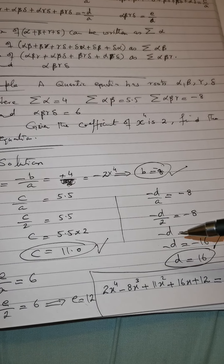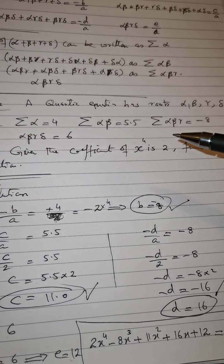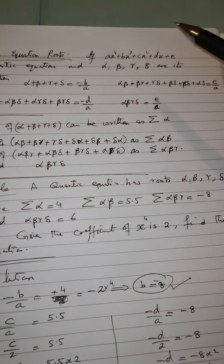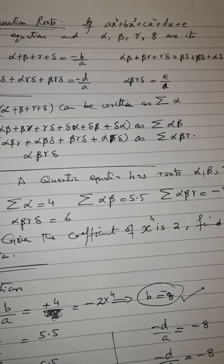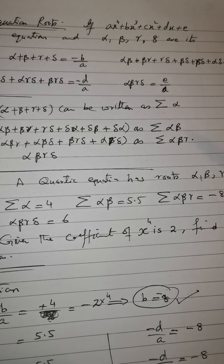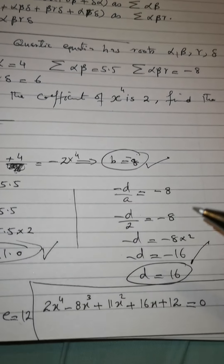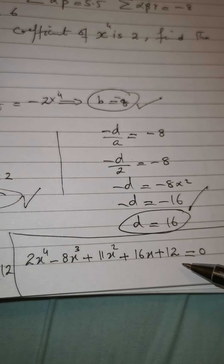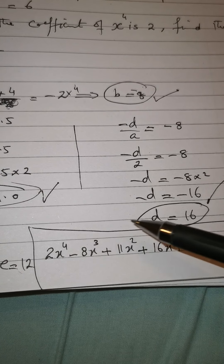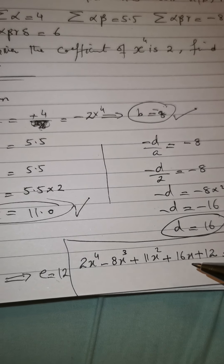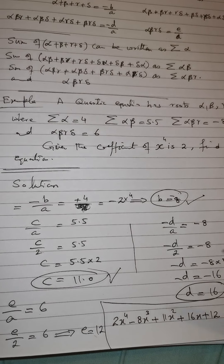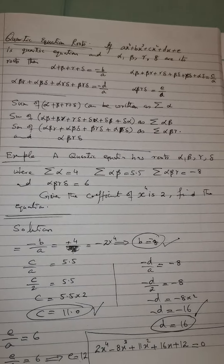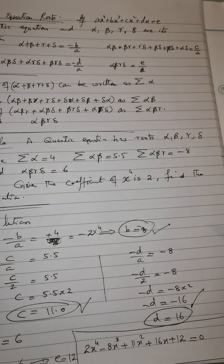Now we have found all coefficients: a = 2, b = −8, c = 11, d = 16, e = 12. We just put the values of a, b, c, d, and e into the quartic equation to get the required equation equal to zero. In this way we find the quartic equation from the given summations of roots.